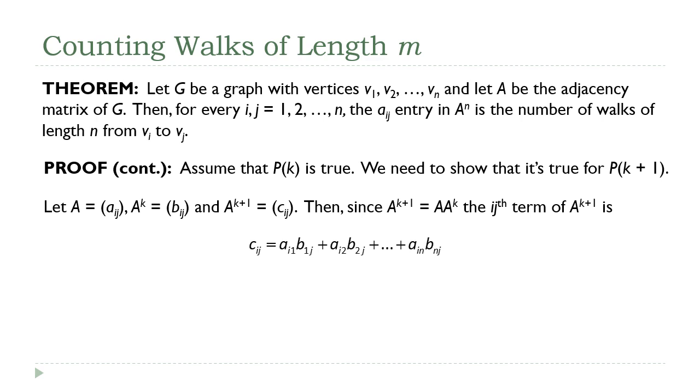Okay, so look at this first term. A sub i1. That is the i1 entry of the original base adjacency matrix. So that's telling me the number of edges, the number of walks of length 1, if you like, between V sub i and V sub 1. Now, B sub 1j, that came from the A to the k matrix. So that's telling me the number of walks of length k between V sub 1 and V sub j.